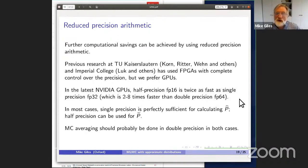What we can do is use single precision for calculating p hat, because I think that's perfectly sufficient. But then for the p tilde simulations, we can use half precision for that and gain an additional factor two in performance. We get to do those GPU simulations. I would say that the averaging process should be done in double precision in both cases, because if you're averaging over a very large number of paths, you can get a significant accumulation of roundoff error if you're doing that in single precision.